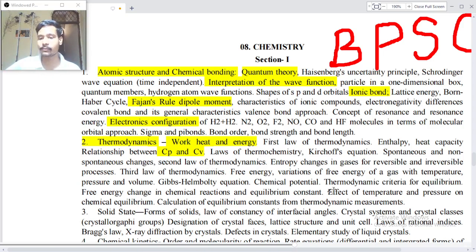Entropy changes in gases for reversible and irreversible processes, third law of thermodynamics, free energy variation of the free energy of a gas with temperature, pressure and volume, Gibbs-Helmholtz equation, chemical potential, thermodynamic criteria for equilibrium, free energy changes, chemical reaction and equilibrium constant, effect of temperature and pressure on chemical equilibrium, calculation of equilibrium constant from thermodynamic measurements.